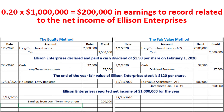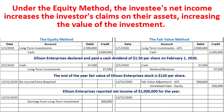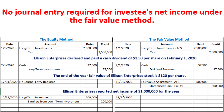Since Ellison Enterprises recorded net income, our claims on their assets as partial owners has increased, making our investment more valuable. So we also debit the long-term investments account for two hundred thousand dollars. For the fair value method, there is no journal entry related to the net income of the corporations whose stock you've invested in, so no journal entry is required.